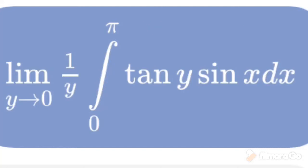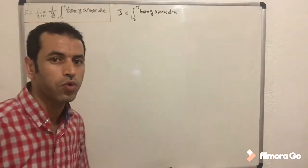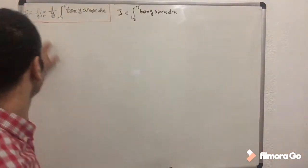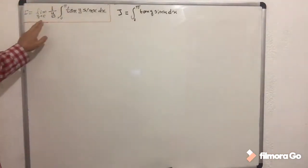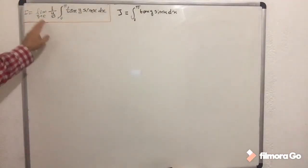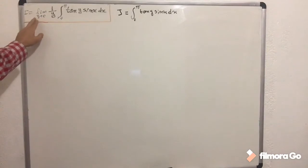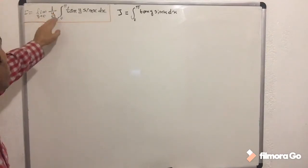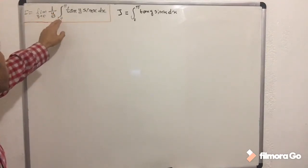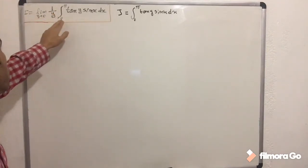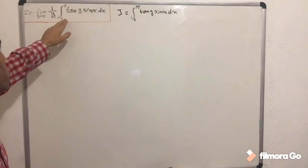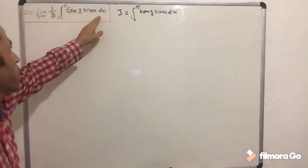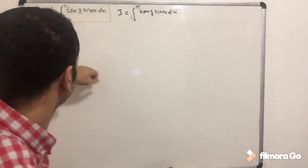Good morning. In today's video we are going to evaluate this limit, set as I equal the limit as y is approaching to 0 of 1 over y multiplied by the integral from 0 to π of tangent(y)·sin(x) dx.